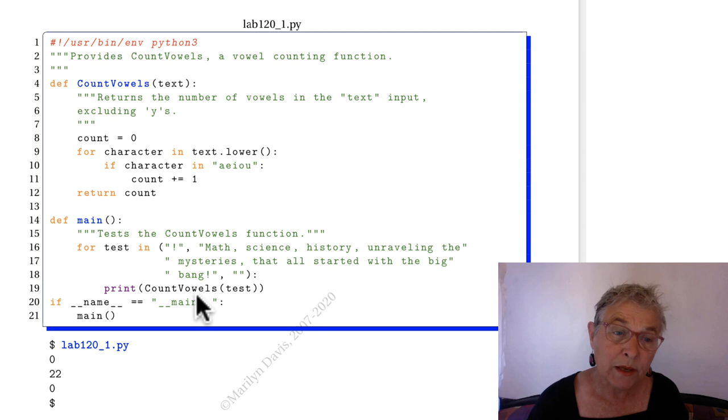Line twenty is the important line. It has our trick. Magic name equals magic main. Let's use it in another module.